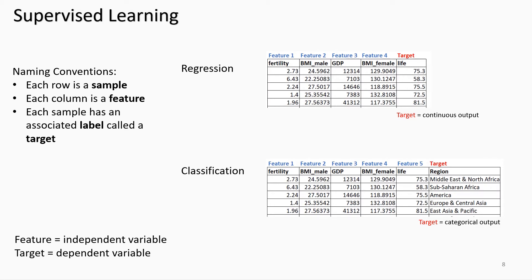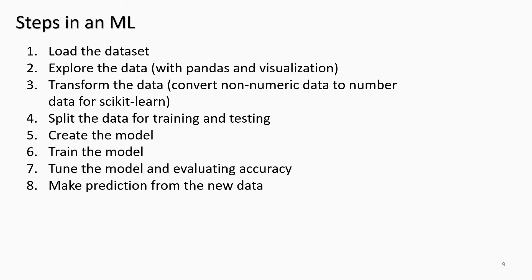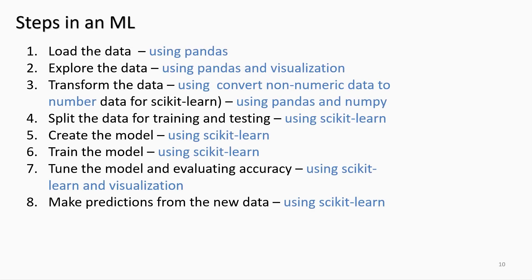These are the typical steps taken when applying a machine learning model. Although these steps will be applied in our regression example, they can also be used for classification and unsupervised learning problems. These steps involve multiple Python libraries — the first few steps primarily relate to Pandas, NumPy, and data visualization libraries such as Matplotlib and Seaborn, while the other steps involve scikit-learn.